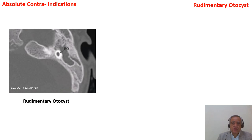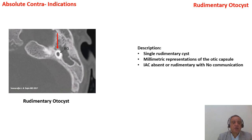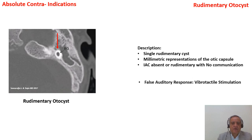The second absolute contraindication is rudimentary otocyst — a small submillimetric cavity which is not related to the internal auditory canal. Sometimes you find a rudimentary internal auditory canal or you cannot find it at all, and this cavity is not connected to the internal auditory canal. This is different from cochlear hypoplasia type 1, which is bud-like and has a vestibular system. Here it is only one rudimentary cavity. The same point about false auditory response or vibrotactile stimulation also applies here.